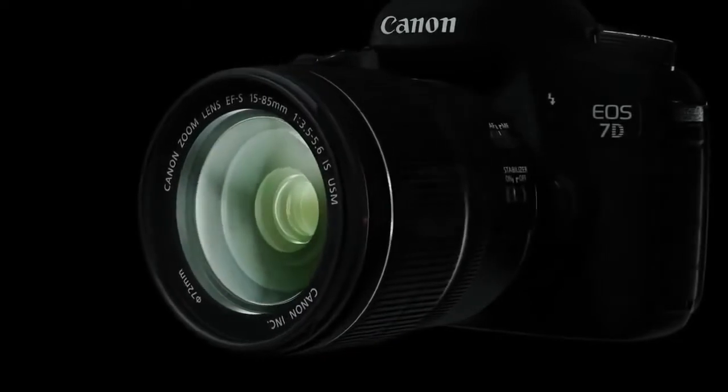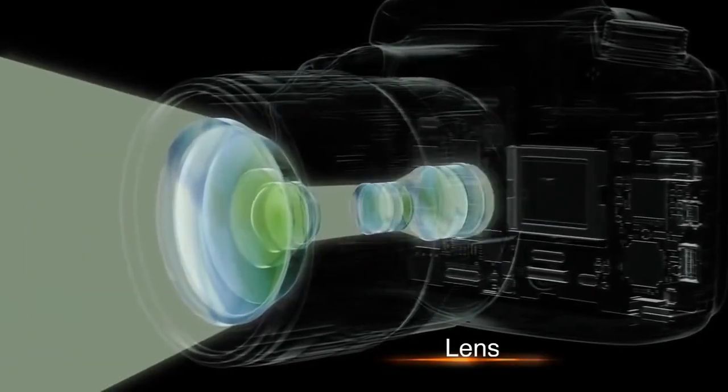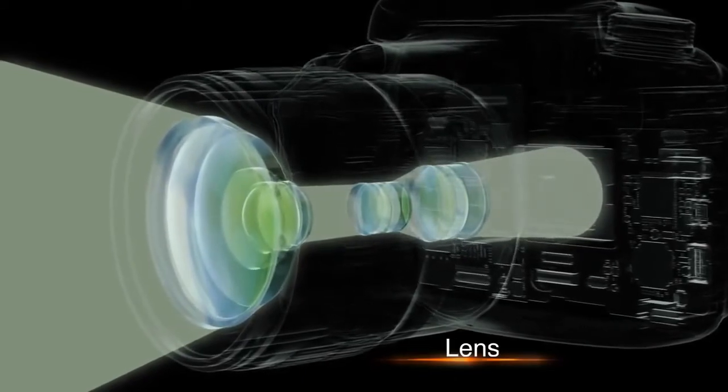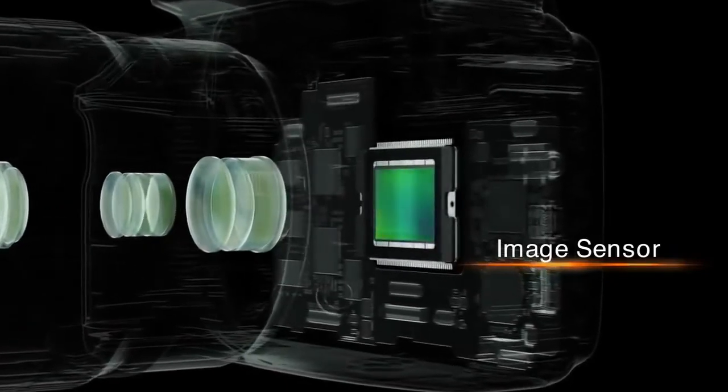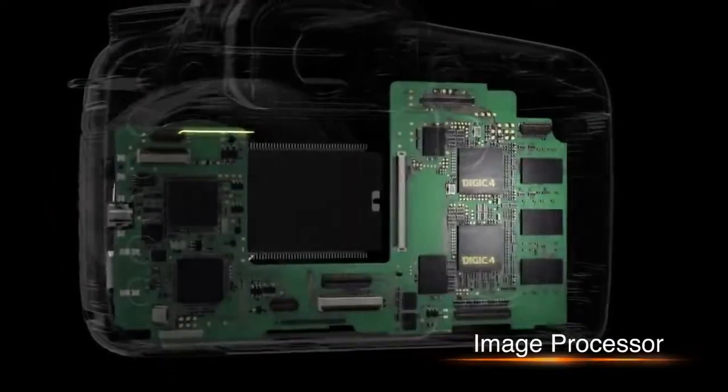Like the human eye, a digital camera captures an object in the form of light through its lens. An image sensor, like the retina of the eye, then reads the light as an image. Finally, an image processor converts the image into a photograph.